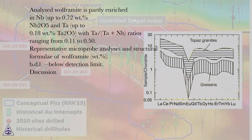Analyzed wolframite is partly enriched in Nb, up to 0.72 wt% Nb2O5 and Ta, up to 0.18 wt% Ta2O5, with Ta/(Ta+Nb) ratios ranging from 0.11 to 0.50.